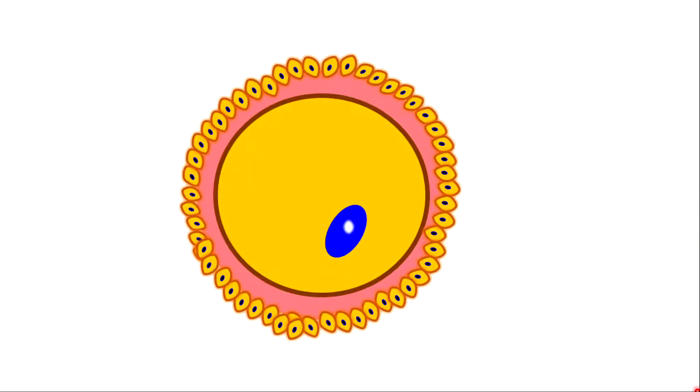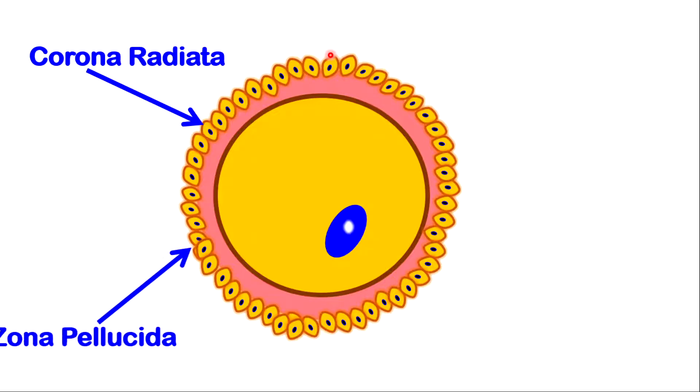Eggs are very unique structures found in the body of females. Surrounding the egg, you have some very important cells called the follicular cells. Surrounding these follicular cells, you have a very important structure known as the corona radiata. Going inwards, the major protective layer, which is called the zona pellucida.